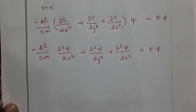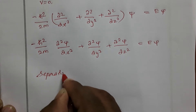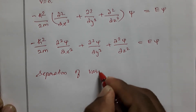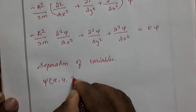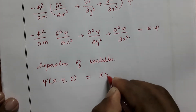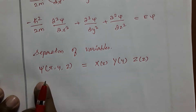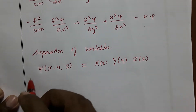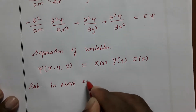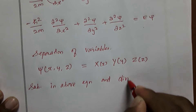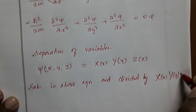That is why we are going for the separation of variables to find out the solution for each variable. For the separation of variables, psi is taken as a product: X(x), Y(y), and Z(z). Now we substitute this separation of variables into the equation and divide by X(x), Y(y), Z(z).